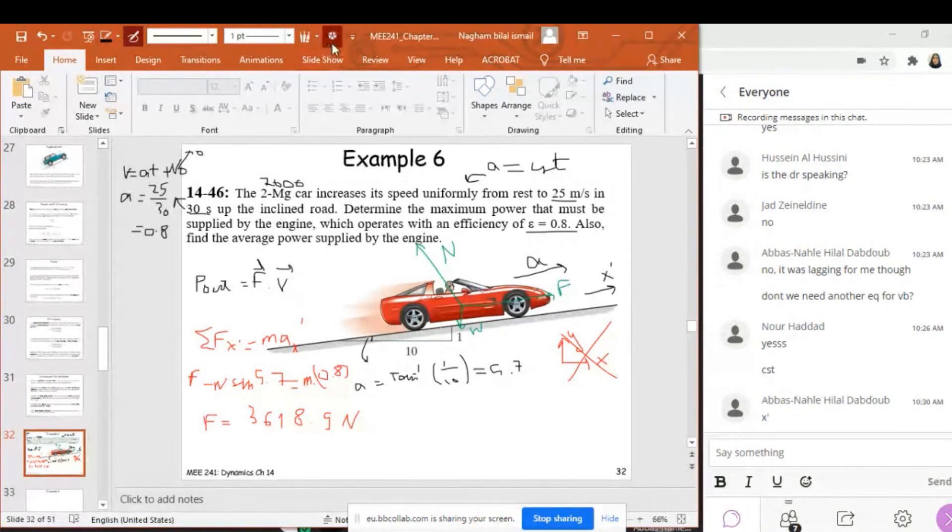Whenever I know F and I know v is 25, I can find the power out. The power out equals 3,618.9 times 25, which is a very big number. I'm gonna convert it to kilowatts.